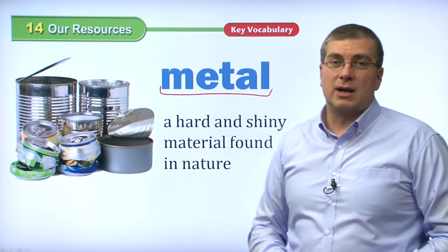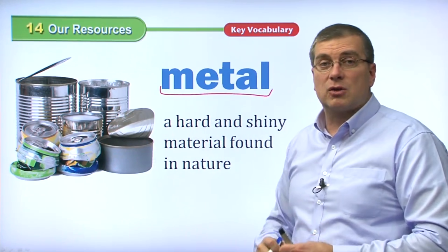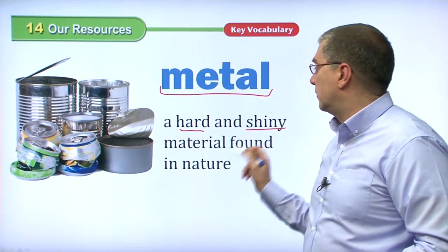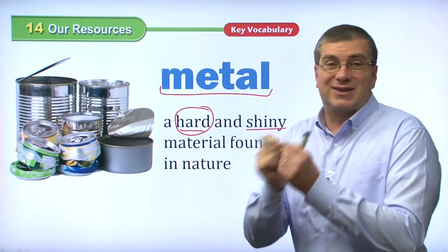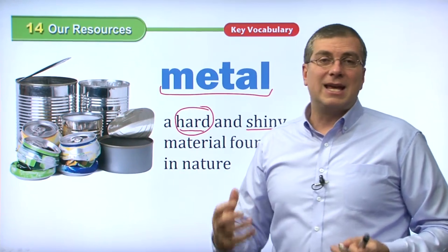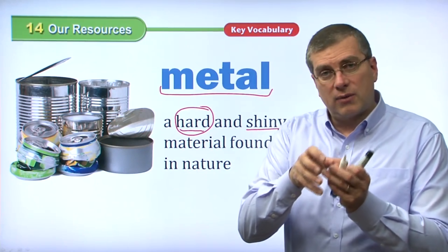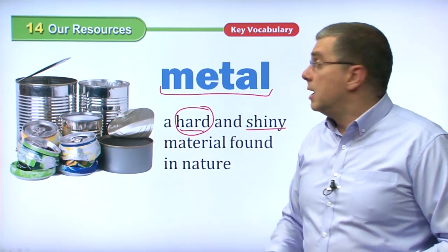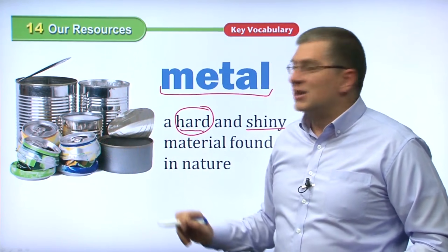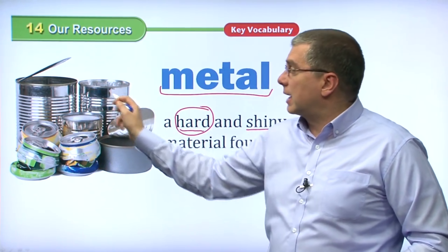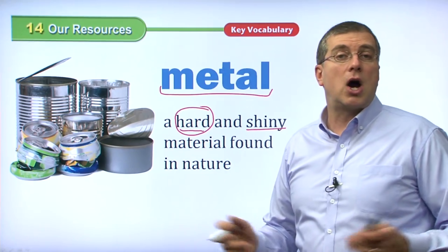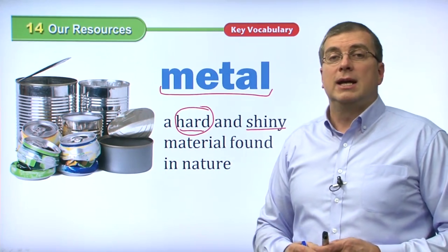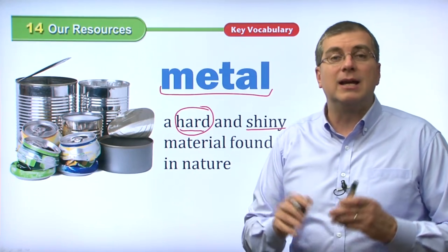We also have metal. Metal is not really a natural resource itself — we get it from nature, from ore; we melt it down and make metal from it. Metal is a hard and shiny material found in nature. The main thing about metal is that it's hard and tough, so if we put something in a metal canister, it protects whatever is inside. We use metal for many things, especially tuna cans, soda pop cans, and other cans for storing or selling things like coffee.